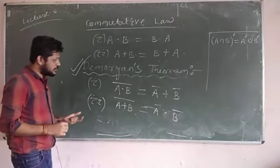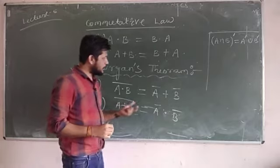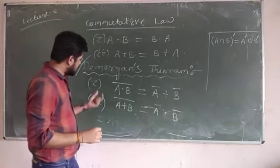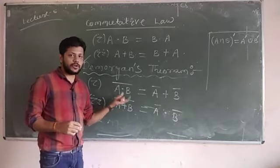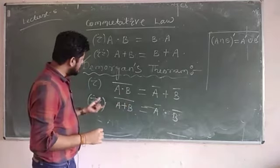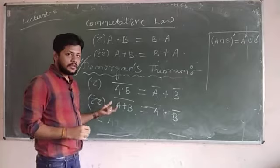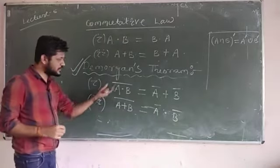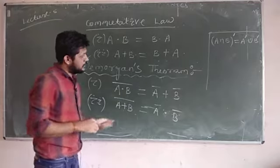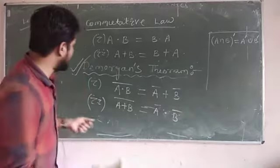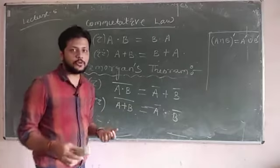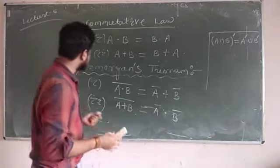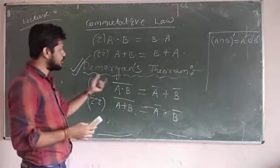You can prove these theorems using a truth table or by using Boolean algebra — that is your homework. Try to prove these theorems at home. In case of any doubt, the next class we will discuss the proof. In this class, I am going to explain the application of De Morgan's theorem with respect to solving Boolean expressions.